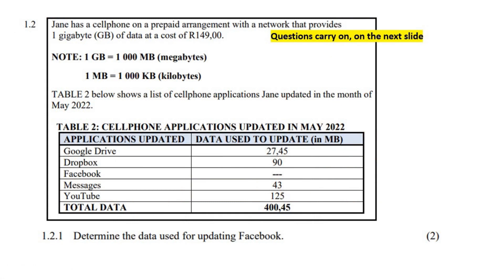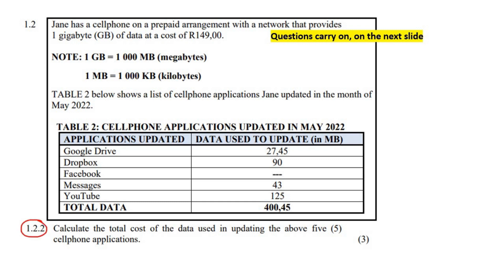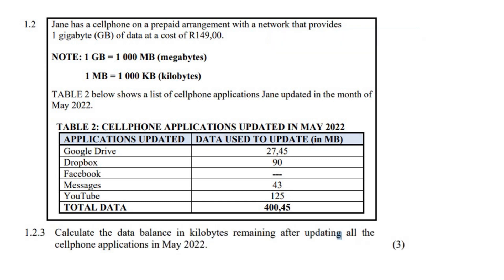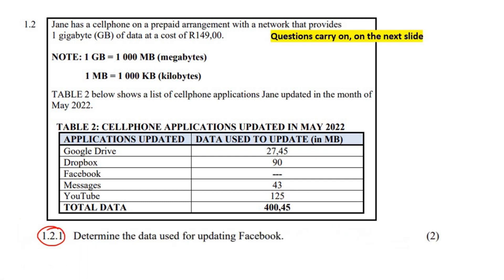So this question will carry on. Here's the first question, here is the second question, and then there's a third question. So let's start. It says that Jane has a cell phone on a prepaid arrangement with a network that provides one gigabyte of data at a cost of 149 rand. And then Table 2 shows a list of cell phone applications that Jane updated.